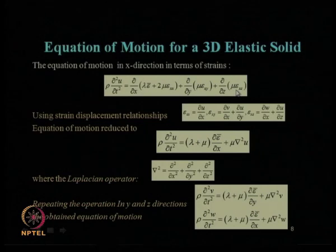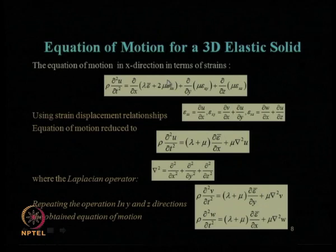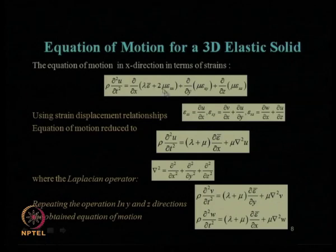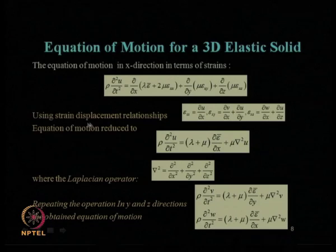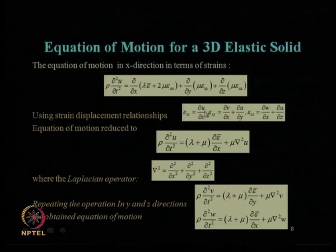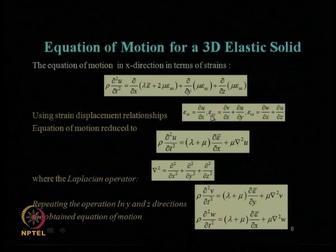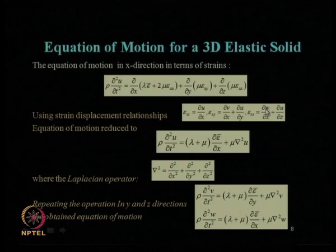Once we get the relationship in terms of strains, we express strains in terms of displacement — the same procedure used for the one-dimensional equation. Normal strain in x-direction epsilon_xx = del u / del x, where u is the displacement in x-direction. Shear strains: epsilon_xy = del v / del x + del u / del y, and epsilon_xz = del w / del x + del u / del z. Using this relationship, the equation reduces to a further simplified form.